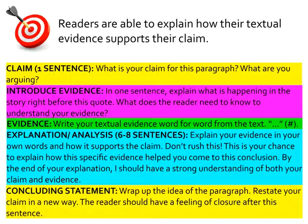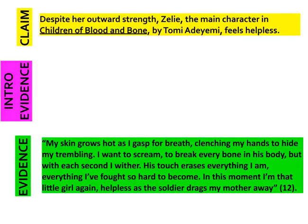You're going to be writing today about your independent reading book. For my example, I'm going to be using Children of Blood and Bone, the text that you read last week in class. So let's get started looking at our claim. Your claim is your argument — it's the statement that you have to prove to the reader by the end of the paragraph.